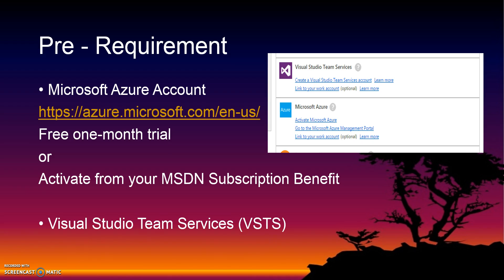The last prerequisite is to put your app for testing in a non-production environment. Have your app use an app service plan other than the plan used in production, because you don't want any existing customers to slow down your app in production. The Microsoft Azure account and Visual Studio Team Services you can activate from your MSDN subscription if you are an MSDN subscriber.